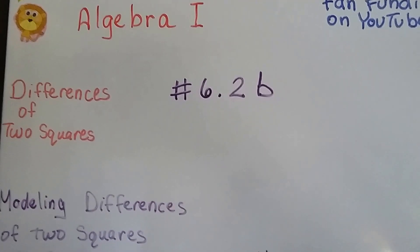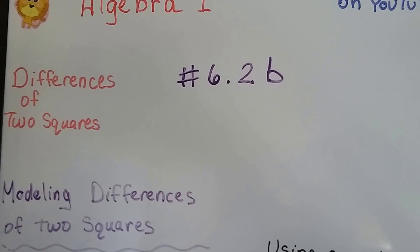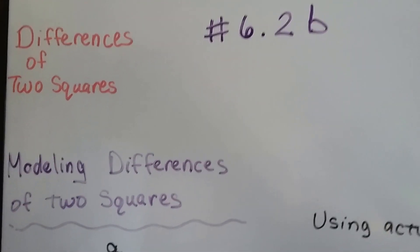Algebra 1, 6.2b. We've been talking about the differences of two squares. We're going to model the differences of two squares.